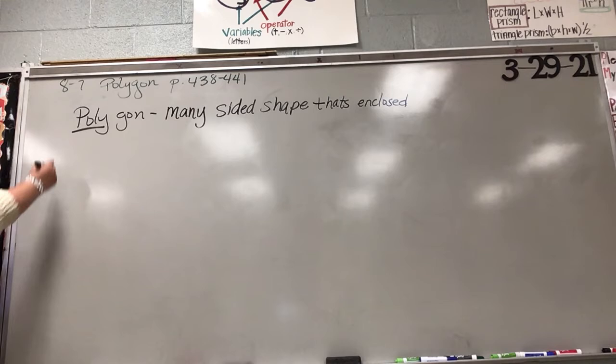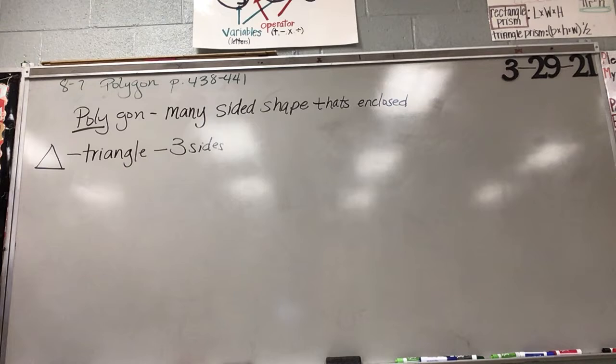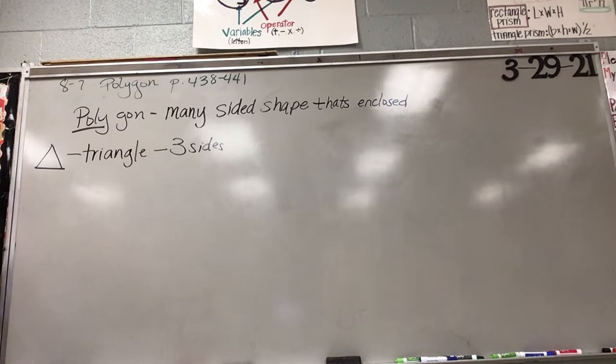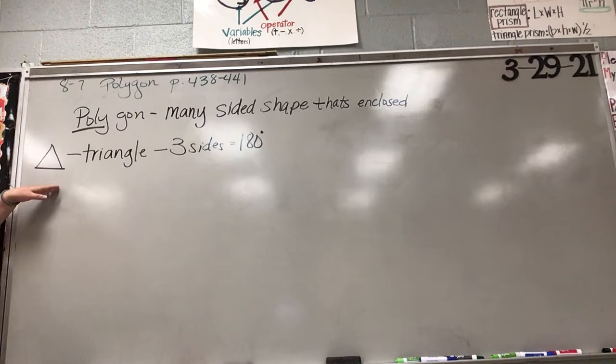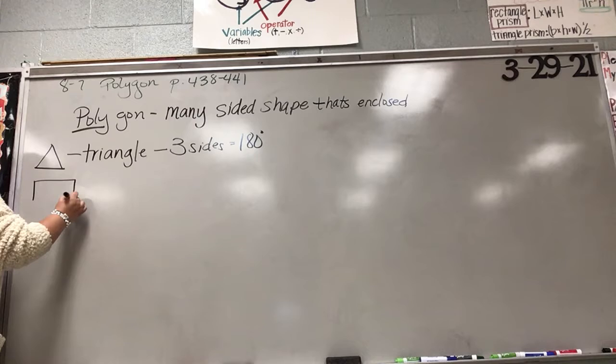Now, we've already talked about this. This is what? This is a triangle. It has three sides. And we've already decided that the triangle has how many degrees? 180. Nobody was answering, so I was just saying. Good.